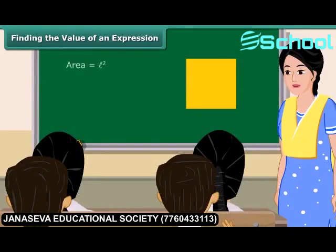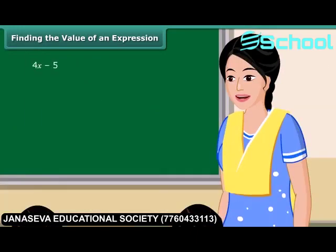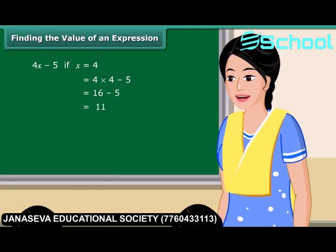See this square — it has an area equal to L squared. If the value of L is equal to 4 cm, then the area of this square would be 16 cm squared. There are a number of situations in which we need to find the value of an expression. Consider the expression 4x minus 5. If the value of x is equal to 4, then the expression equals 4 into 4 minus 5, which is 16 minus 5, that is 11. Similarly, if m is equal to 2, then the value of the expression m squared minus 2 will be equal to 2.